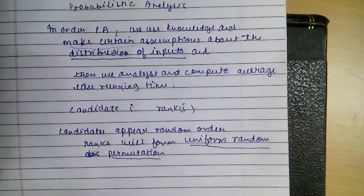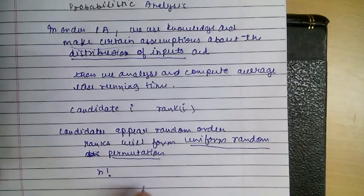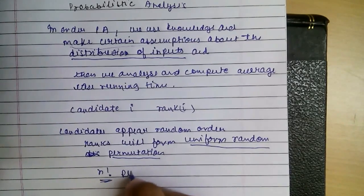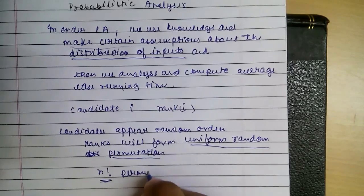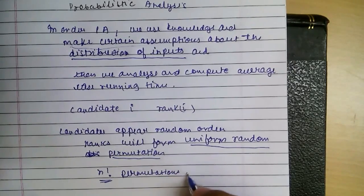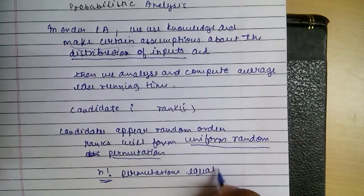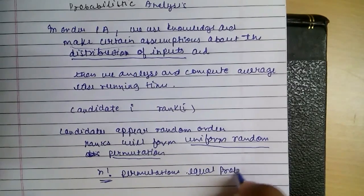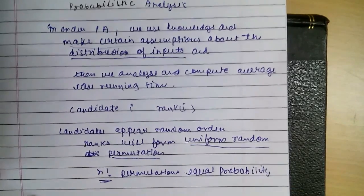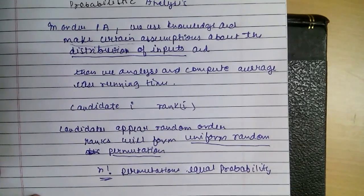That means all the ranks will form uniform random permutation. This simply means that n factorial, as n candidates are there, permutations - the maximum possible permutations - appear with equal probability, and all the permutations are possible with the same probability.